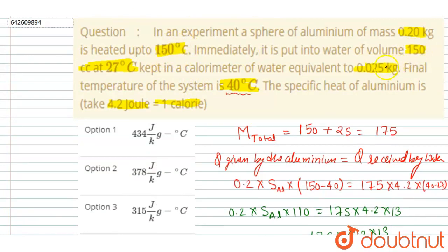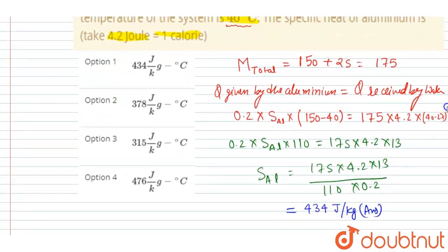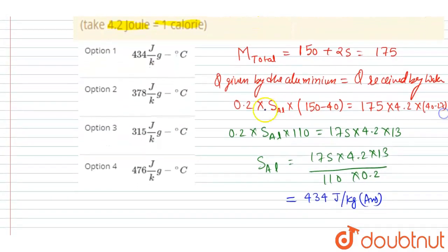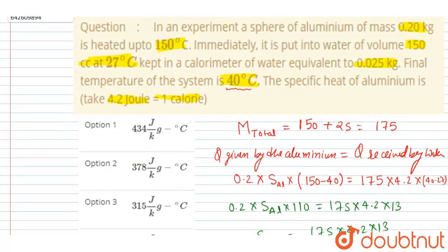The initial temperature of aluminum was given, and the water plus calorimeter at 27 degrees Celsius was given. When they are kept in contact, then the final temperature is 40 degrees Celsius. After using this formula, we got 434 joule per kilogram as the specific heat. Now you can check which option is the correct one.